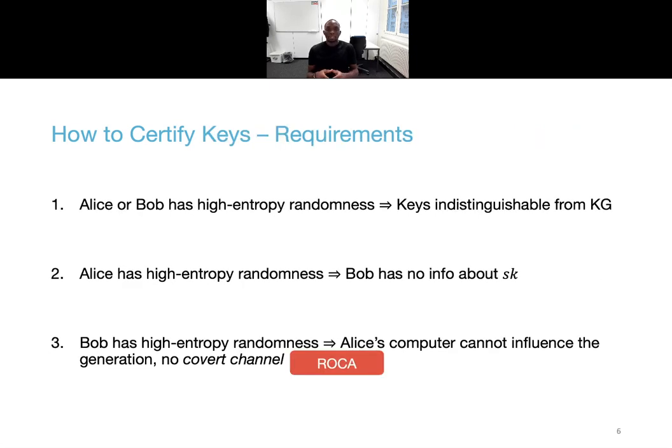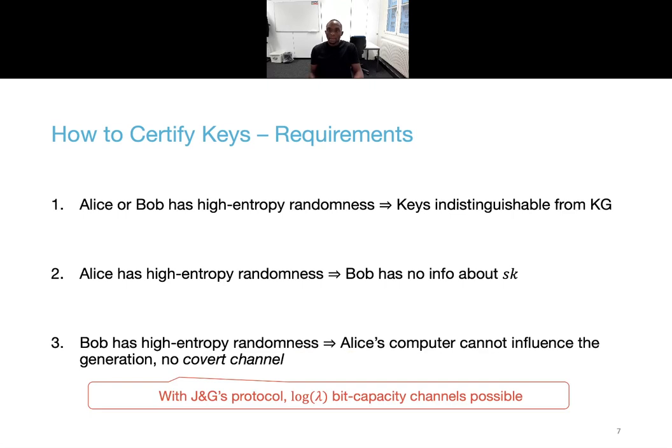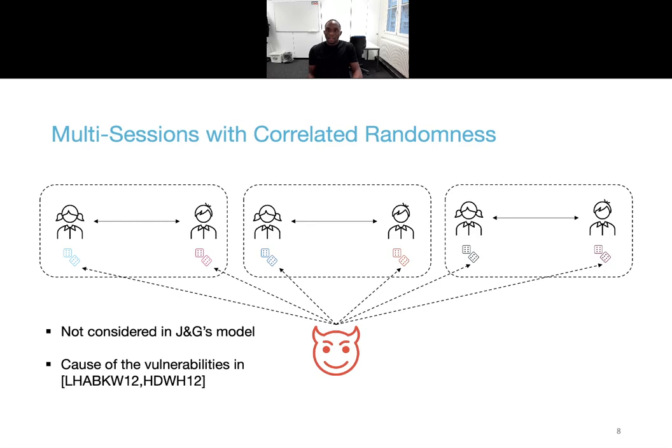And the ROCA attacks precisely exploited the information leaked via public keys to efficiently recover the private keys. On the other hand, Juels and Guajardo's protocol for RSA keys did not exactly guarantee the third property, as log-lambda bit capacity covert channels were still possible, which may actually pave the way for other attacks. In addition to that, the model did not consider multiple sessions that could share correlated randomness, even though it's precisely what was the cause of the vulnerabilities highlighted by Lenstra et al.